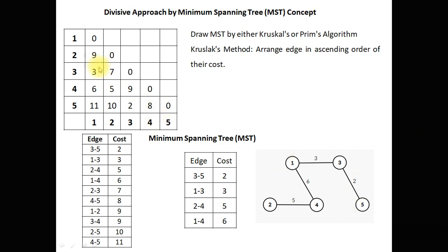There are 10 edges and they are arranged in ascending fashion. Now we build the minimum spanning tree. As there are 5 vertices, 4 edges are sufficient to connect all vertices. So first we select edge 3-5 with cost 2, next we connect 1-3 with cost 3, next we connect 2-4 with cost 5, and after that we connect 1-4 with cost 6. After that there is no need to check remaining edges as 4 edges are already there. This is our minimum spanning tree.